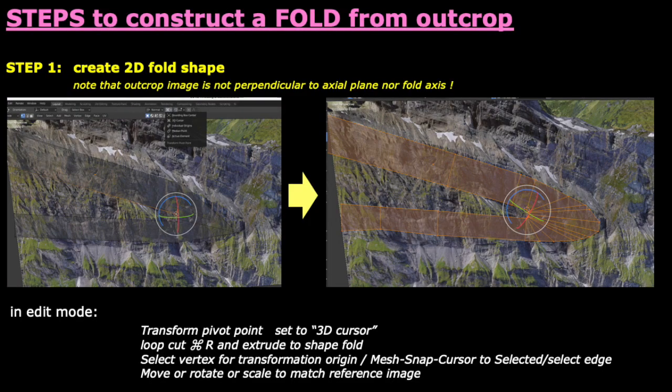To construct a tight fold, we will follow the procedure summarized in this slide. When rotating and scaling, I will snap the cursor to the relevant vertex, switch the transform pivot point to 3D cursor and transform as necessary.